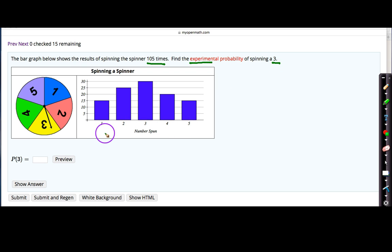So let's first take a look at the data that was collected from our experimental probability. A 3 was spun how many times? It was spun a total of 30 times out of a total of 105 times.